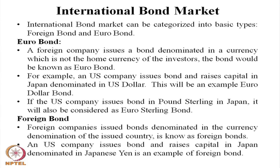The bond would be known as a euro bond — a foreign company issuing a bond denominated in a foreign currency which is not the home currency of the company's investors. For example, a US company issues a bond to raise capital in Japan, denominated in US dollars — this would be a euro bond. The US company raises the bond not in a local Japanese currency but in US dollar currency.